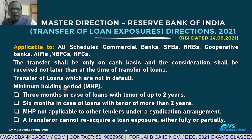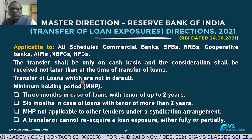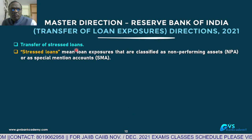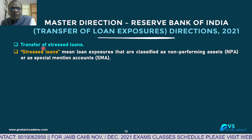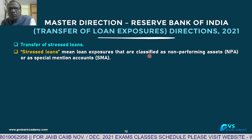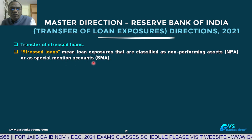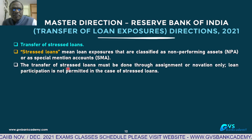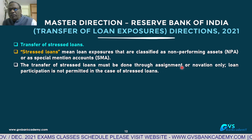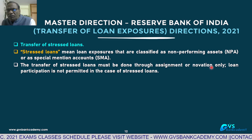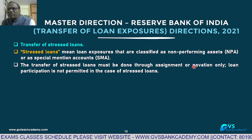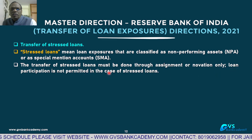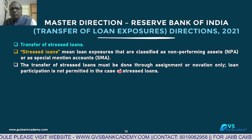These conditions apply to transfer of loans which are not in default. For transfer of stressed loans: stressed loans are classified as NPA or Special Mention Accounts (SMA 0, 1, and 2). The transfer of stressed assets must be done through assignment or novation (a separate fresh contract). Loan participation is not permitted — only outright sale where the entire amount is transferred; no question of participation on a 50-50 or any other split basis.